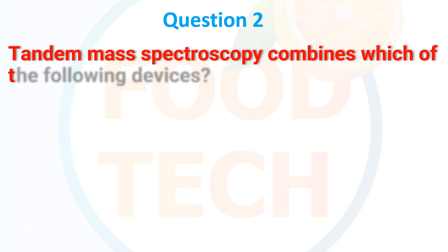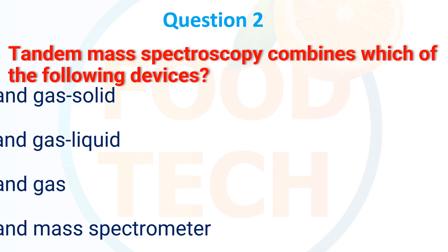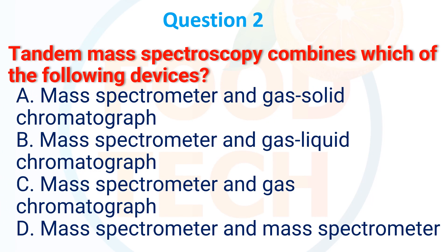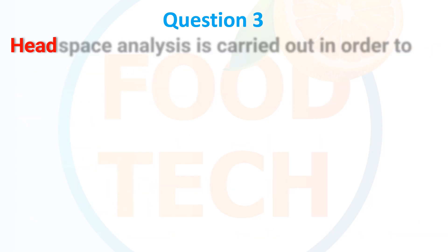Tandem mass spectroscopy is combined with the following device: A. Mass spectrometer and gas-solid chromatography, B. Mass spectrometer and gas-liquid chromatography, C. Mass spectrometer and gas chromatograph, D. Mass spectrometer and mass spectrometer. The correct answer is D: mass spectrometer and mass spectrometer.